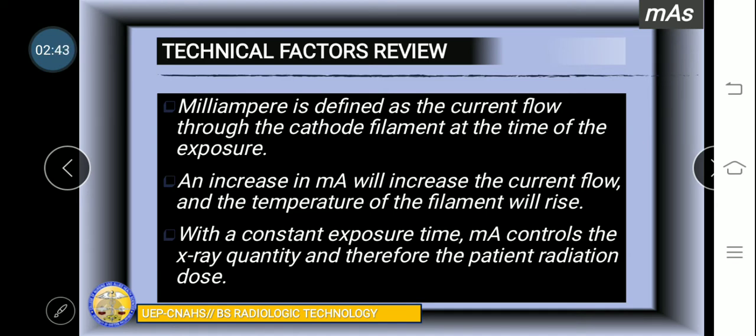With constant exposure time, MA controls the x-ray quantity and therefore the patient radiation dose. Remember here, class, quantity is primarily controlled by MA because the quality is being controlled by what exposure factor? Very good, the kilovolt peak or the KVP.